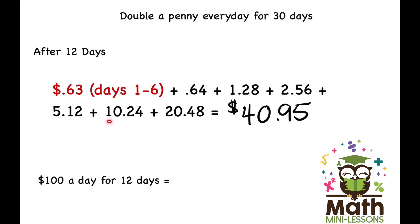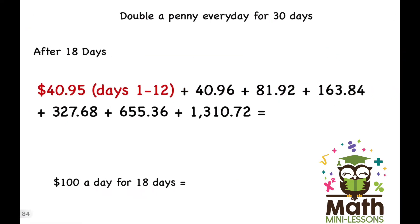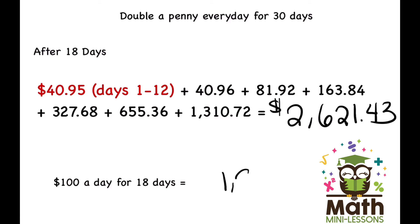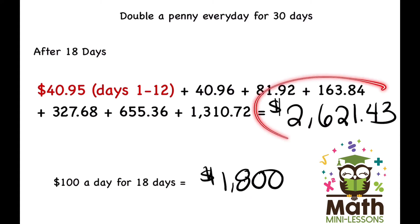Going another six days forward and continuing that same pattern, I now have $40.95 — things are definitely getting bigger, but it's still way less than the $1,200 for $100 a day. But by day 18, I'm now at $2,621.43 versus $1,800, so now I've gotten to a bigger number just by doubling.